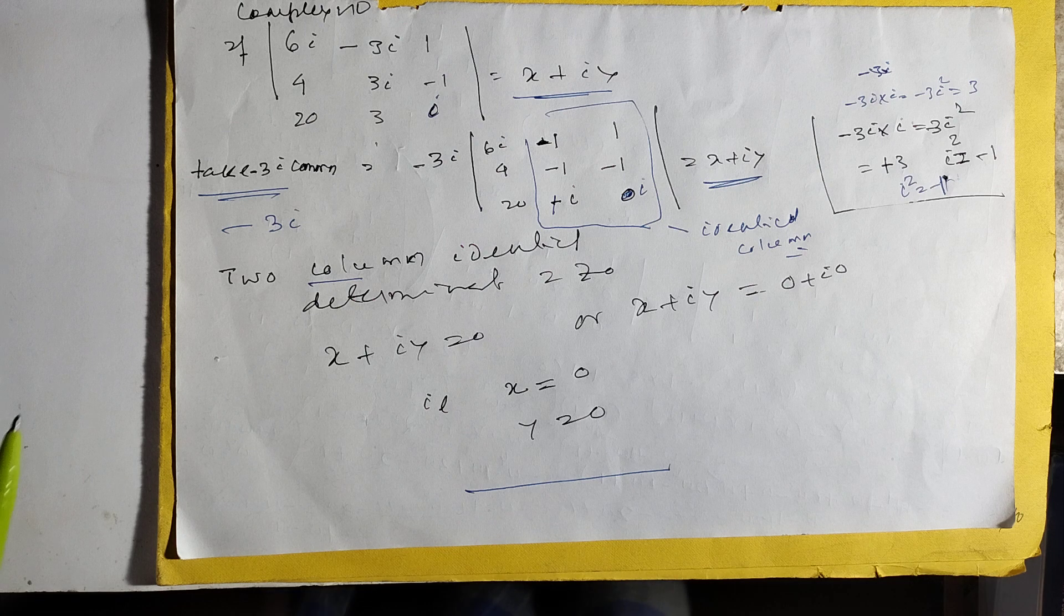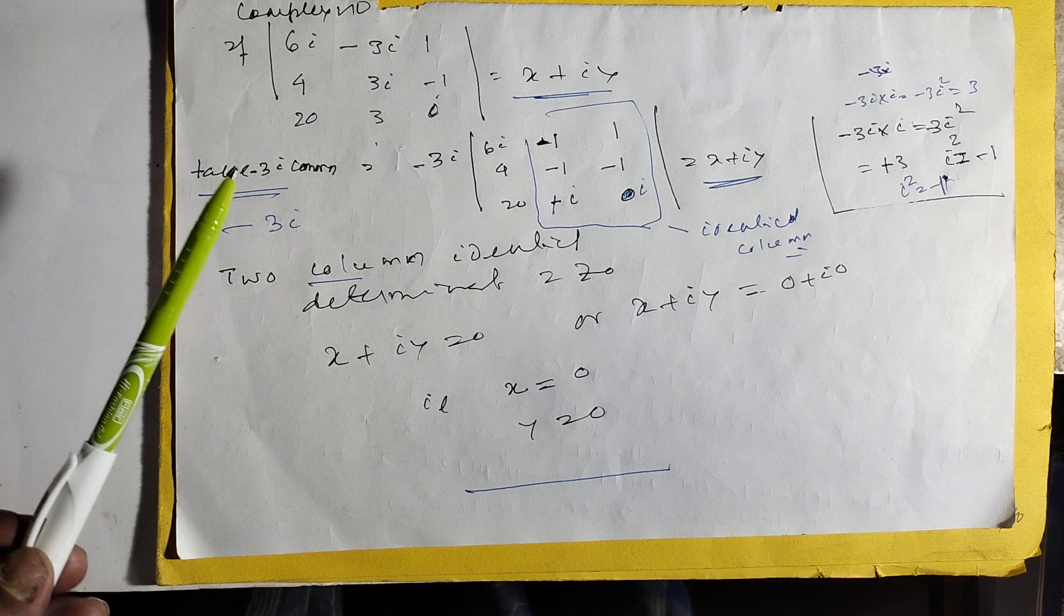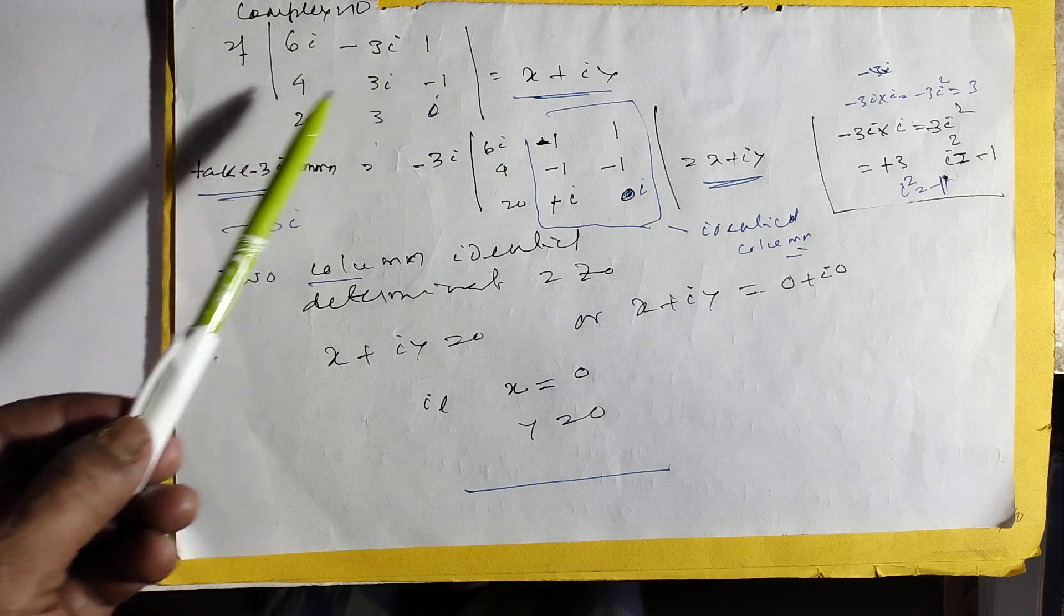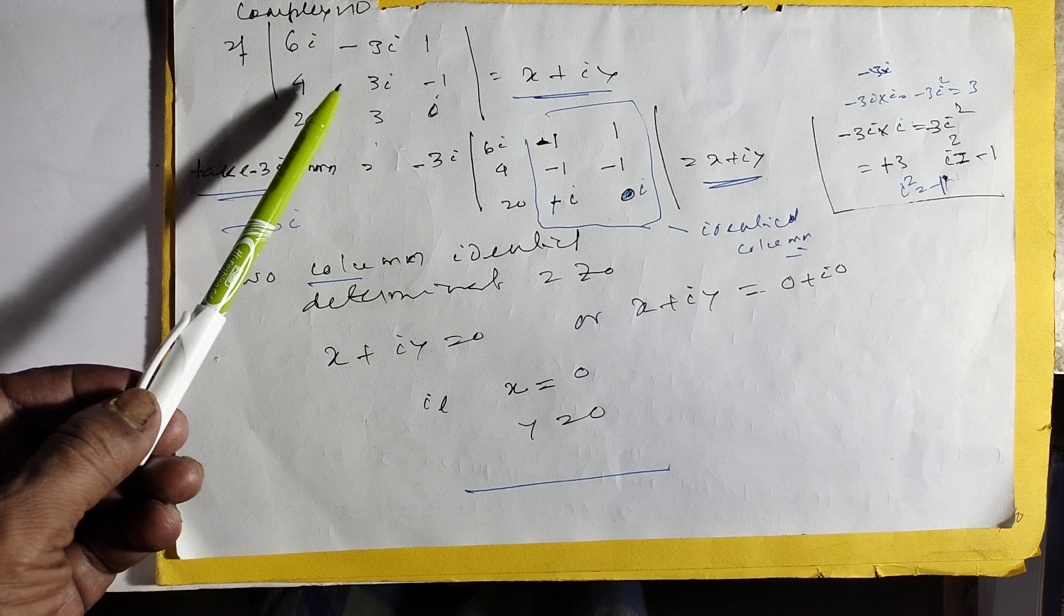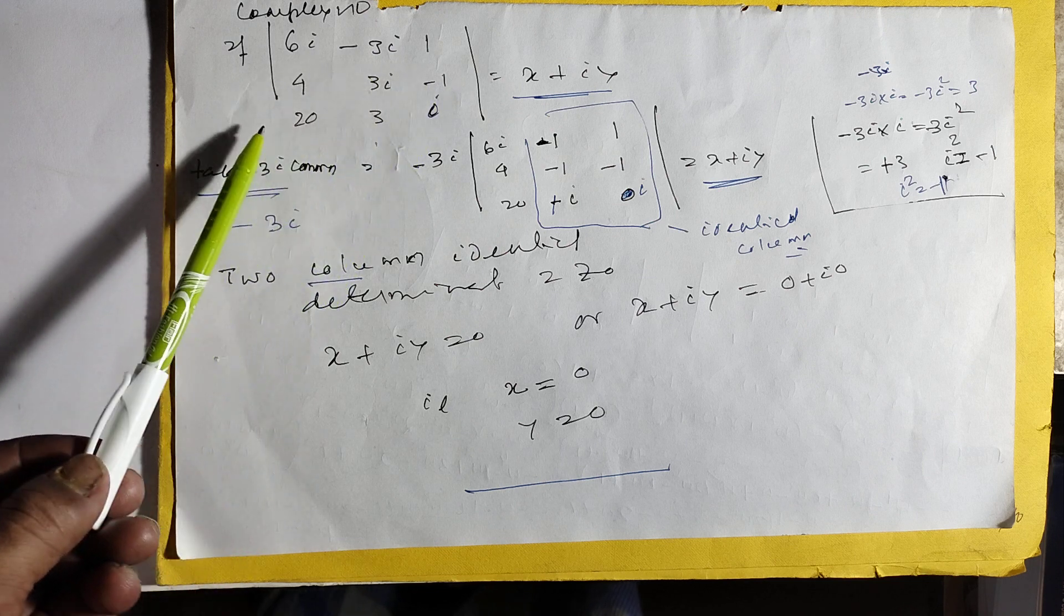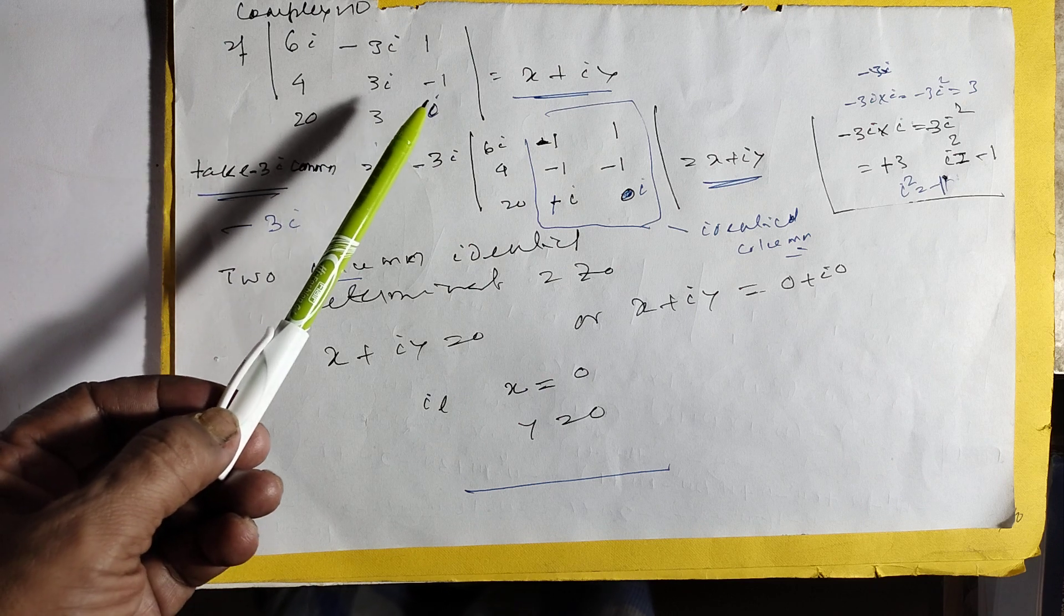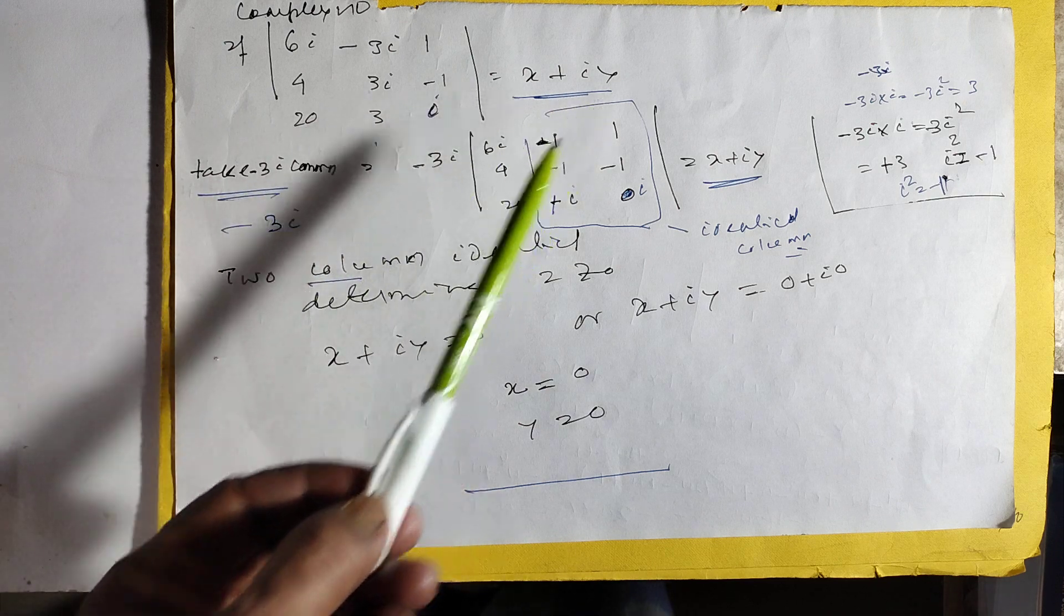Here, another complex number. 6 iota minus 3 iota, i, 1, 4, minus plus 3 iota, minus 1, 2, 20, plus 3 into iota, is equal to x plus iy, find x, y.